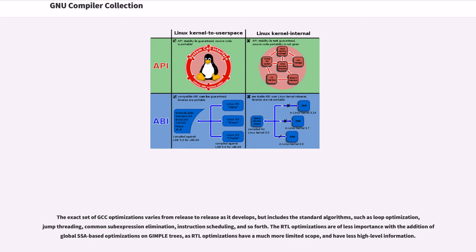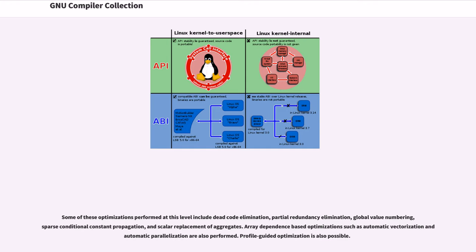The RTL optimizations are of less importance with the addition of global SSA-based optimizations on GIMPL trees, as RTL optimizations have a much more limited scope and have less high-level information. Some optimizations performed at this level include dead code elimination, partial redundancy elimination, global value numbering, sparse conditional constant propagation, and scalar replacement of aggregates. Array-dependence-based optimizations such as automatic vectorization and automatic parallelization are also performed. Profile-guided optimization is also possible.